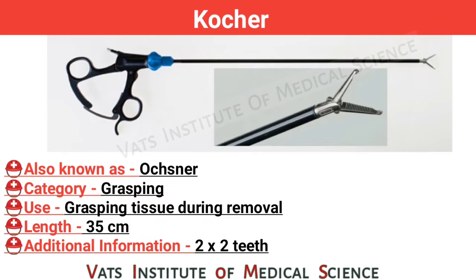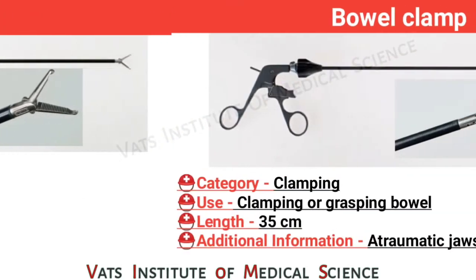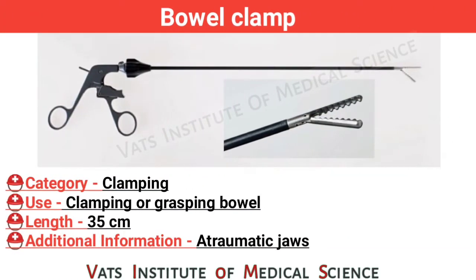Coacher, also known as ostener. Category: grasping. Use: grasping tissue during removal. Length: 35 cm. Additional information: 2 x 2 teeth.